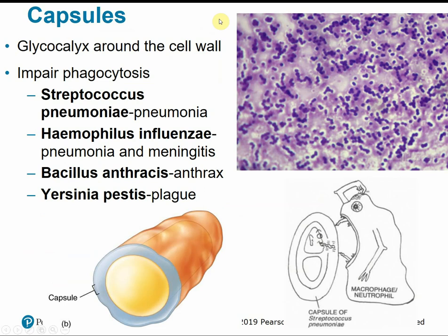Some pathogens can damage the surface of the host cell, but most have to penetrate actual tissues to cause disease. One mechanism is production of capsules — thick, hardened glycocalyx cases or sugar cases around the cell wall. These help inhibit phagocytosis, making cells more resistant to being eaten. Macrophages and immune system cells aren't able to bite through this hard capsule shell.